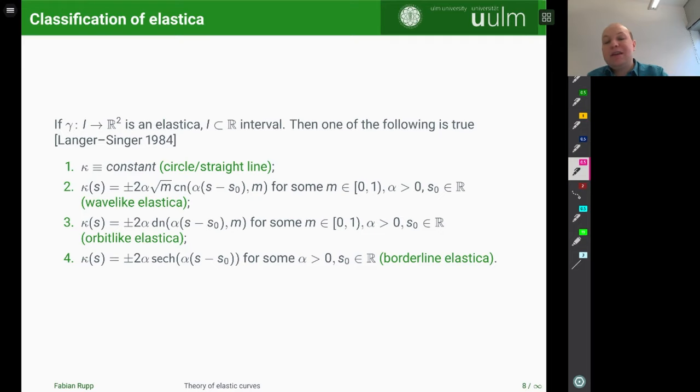And what one ends up with is then the following set of elastica. I just wrote down how the curvatures may look like. So if we have an elastica of a not necessarily closed curve, then one has one of the four cases. The first one is that κ is a constant, in which case we end up with either a circle or a straight line. And then there are these cases 2, 3 and 4, where the curvature can be written in terms of an elliptic function.